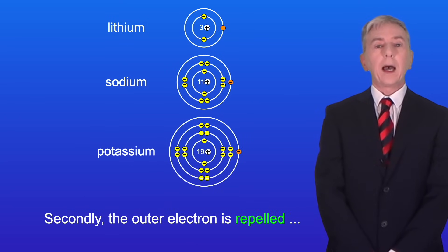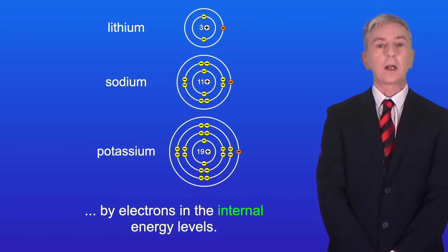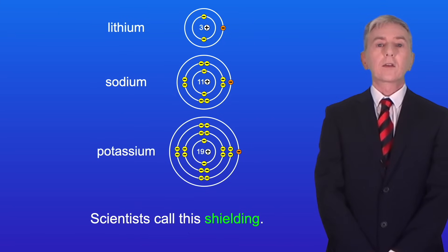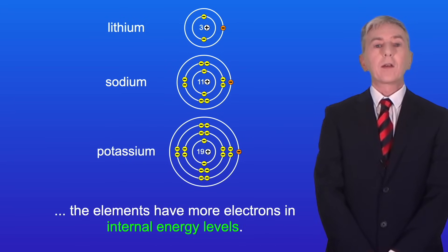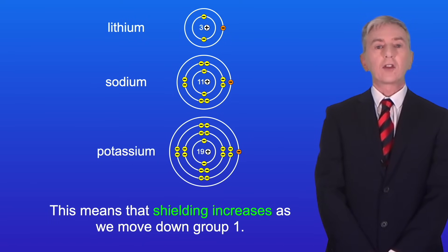Secondly, the outer electron is repelled by electrons in the internal energy levels. Scientists call this shielding. And this decreases the attraction between the nucleus and the outer electron. As we move down group 1, the elements have more electrons in internal energy levels. And this means that shielding increases as we move down group 1.